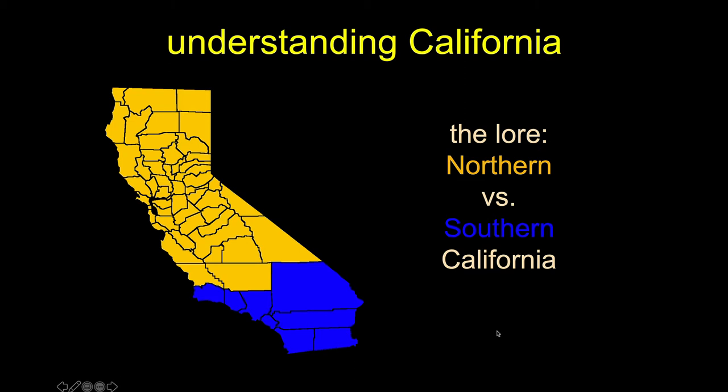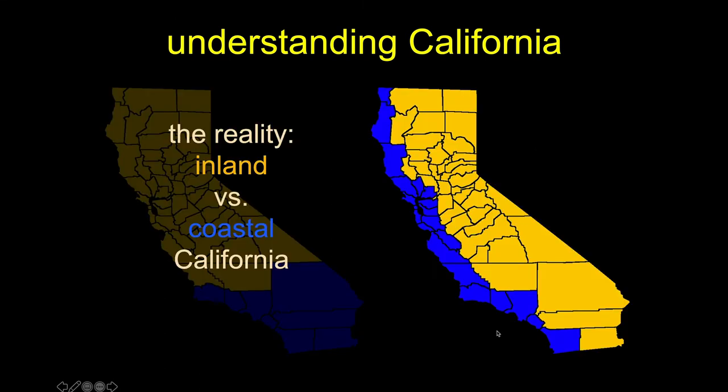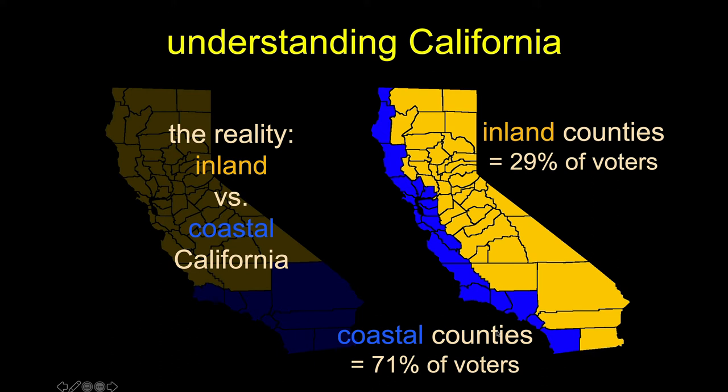The lore is there is Northern California versus Southern California, with most folks defining the boundary around Point Conception. But the reality is quite different — it's coastal California versus inland California. This Northern California/Southern California rivalry is silly. It's really the folks that live at the coast versus the folks that live distanced from the coast. Most of our population lives at the coast. In the last decadal census, about 71% of Californians live in a county that touches seawater.